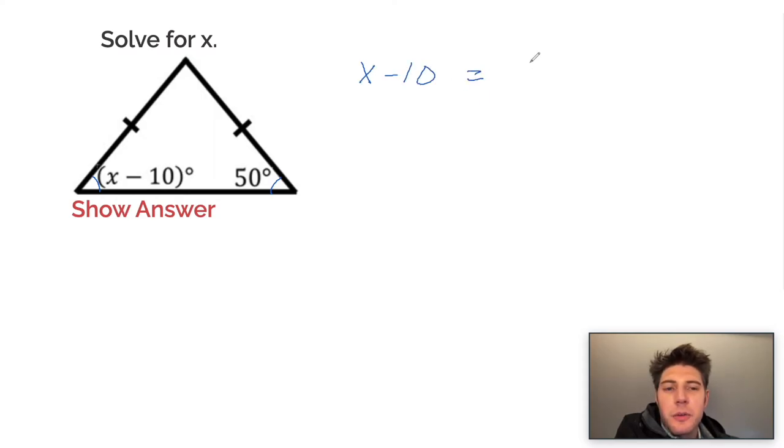We can say x minus 10 equals 50. Now this parentheses doesn't mean anything really because it's already alone on that side. So we can just get rid of it. Once again, this says solve for x. So our whole goal is get x by itself.